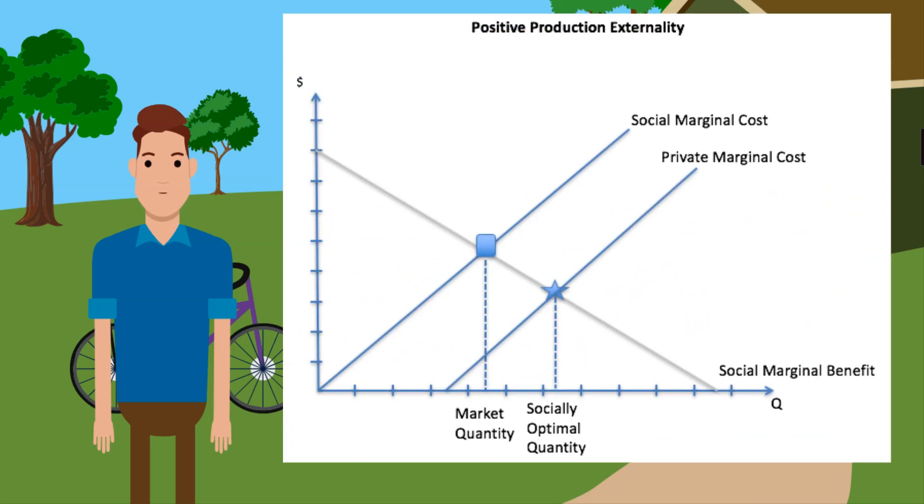Looking at it on a graph, we can see that the market is producing too little of this good. In this case we want more beekeeping. Government policies proposed to increase beekeeping could include tax breaks or subsidies.